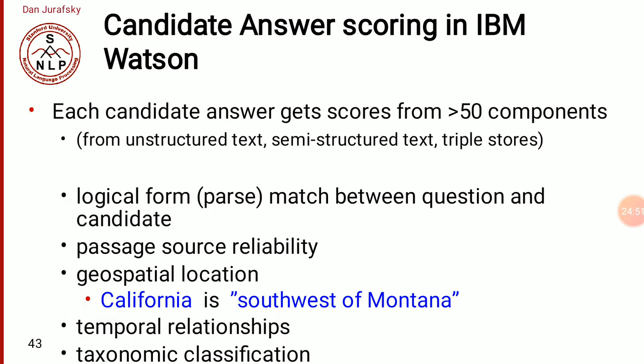Candidate answer scoring in IBM Watson — a hybrid approach — uses components such as logical form, parts of speech, source reliability, geospatial location (e.g., California south of Montana), temporal relationships, and taxonomic classification. IBM Watson used IR to generate the candidate list and then used these richer knowledge resources to score each candidate and find the final answer.